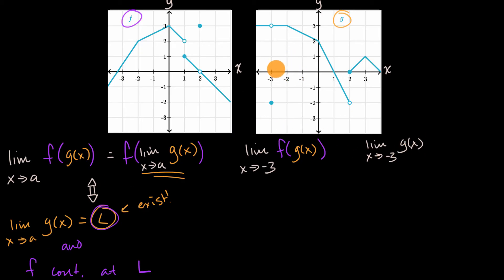Well, when we're approaching negative three from the right, it looks like our function is actually at three. And when we're approaching negative three from the left, it looks like our function is at three. So it looks like this limit is three.